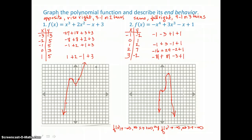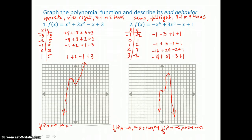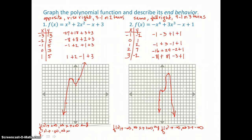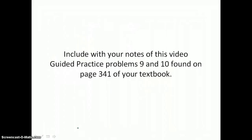We didn't describe the end behavior using function notation for our cubic, so let's do that quickly. We could say f of x approaches positive infinity as x approaches positive infinity, and f of x approaches negative infinity as x approaches negative infinity. Include with your notes guided practice problems 9 and 10, found on page 341 of your textbook.